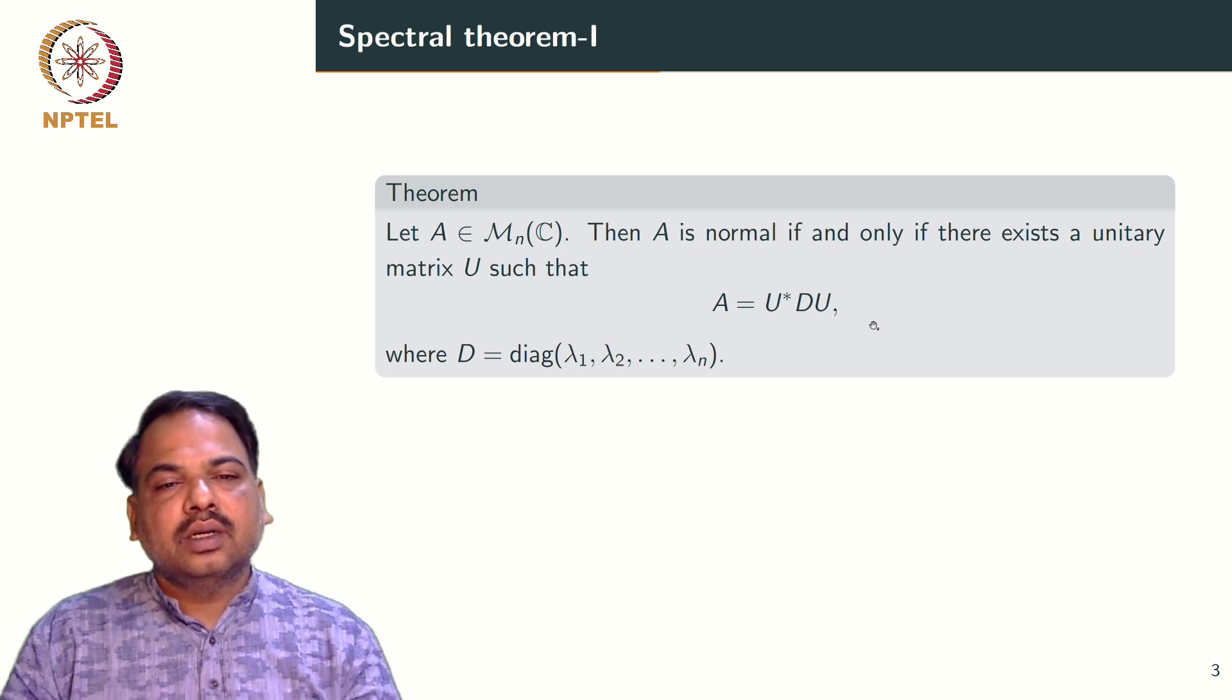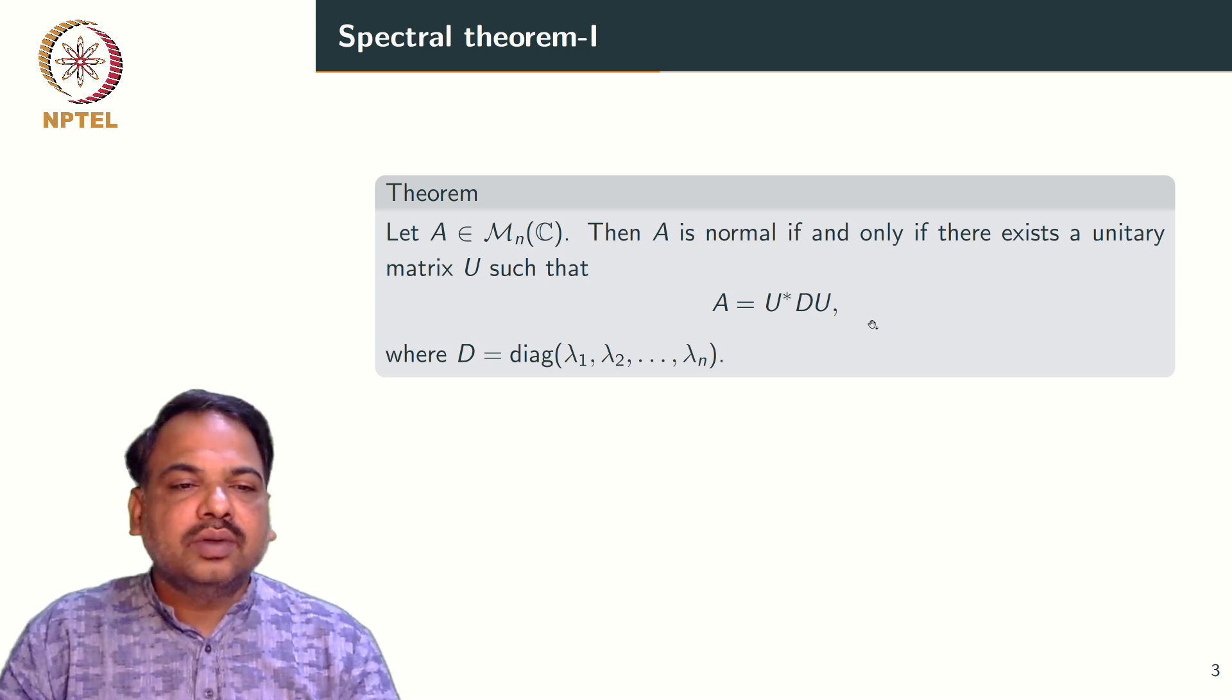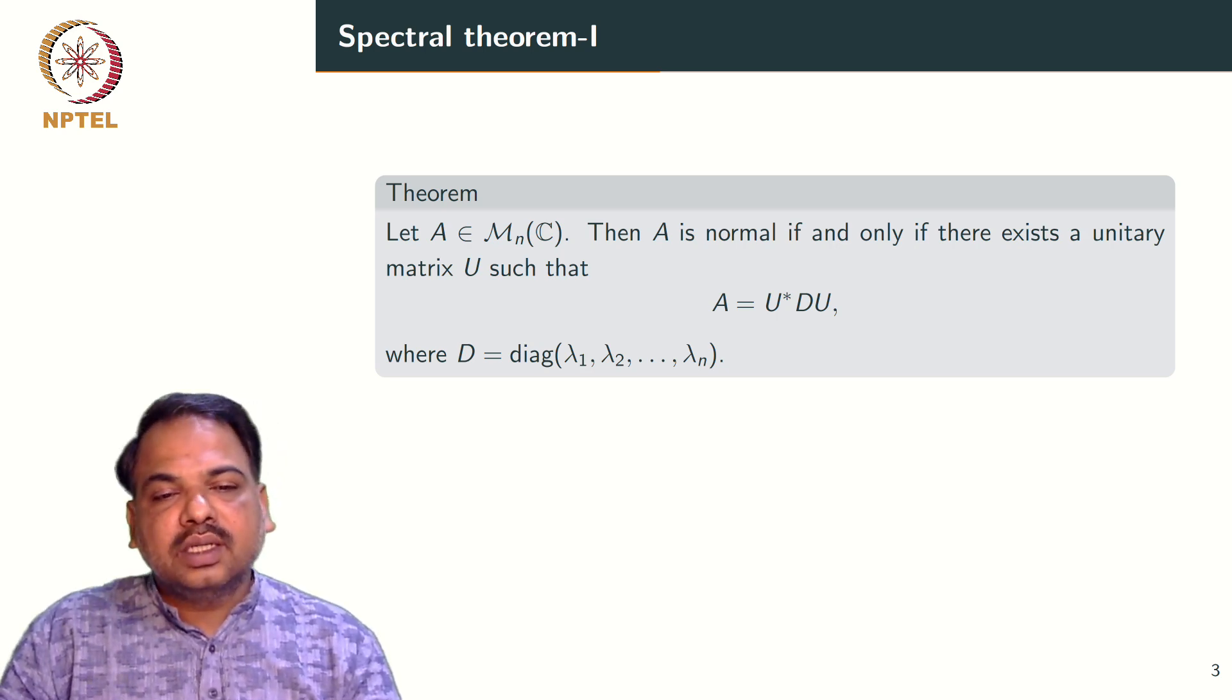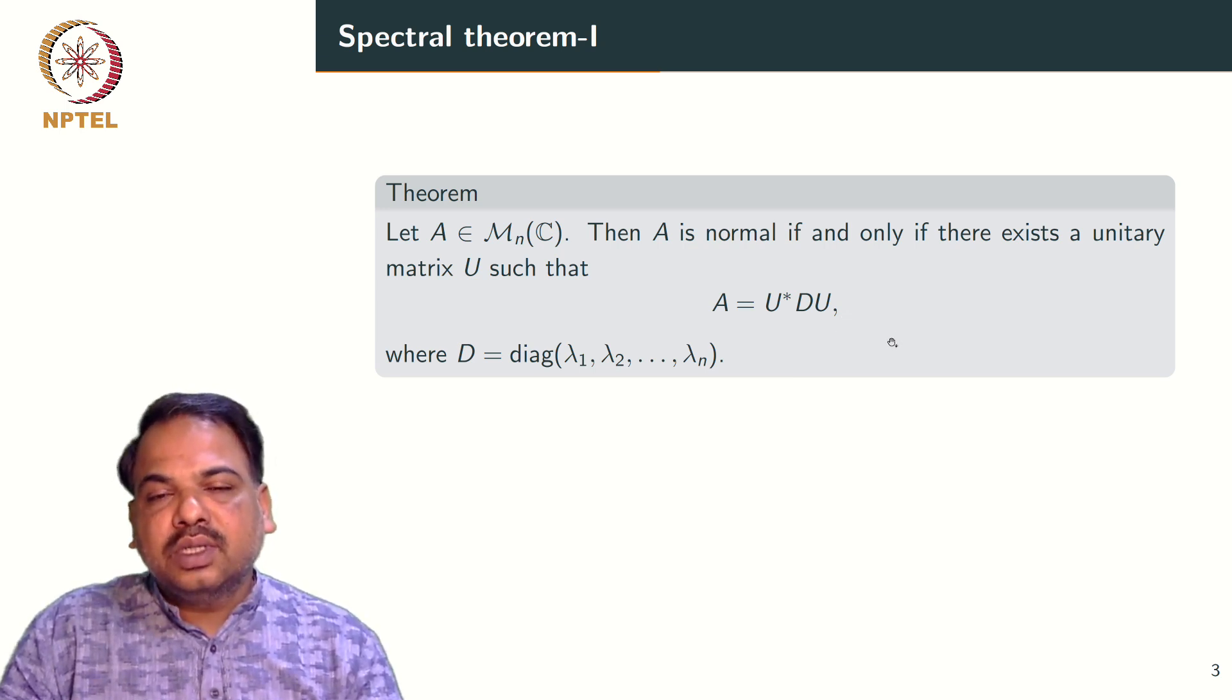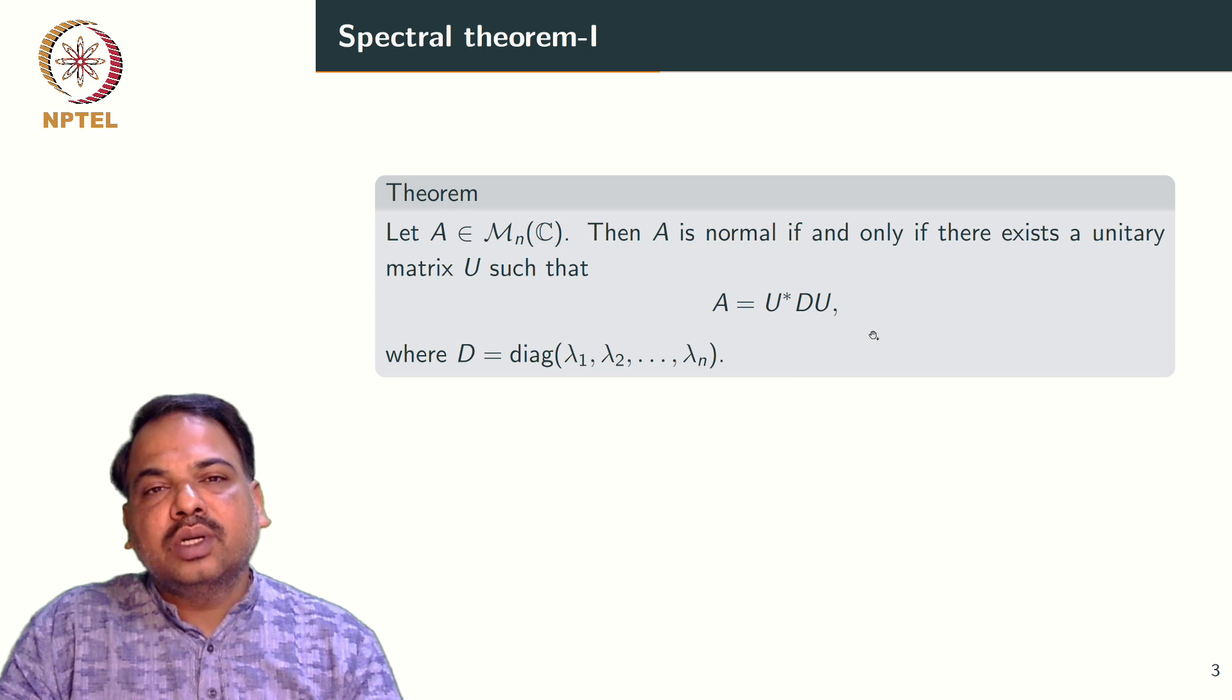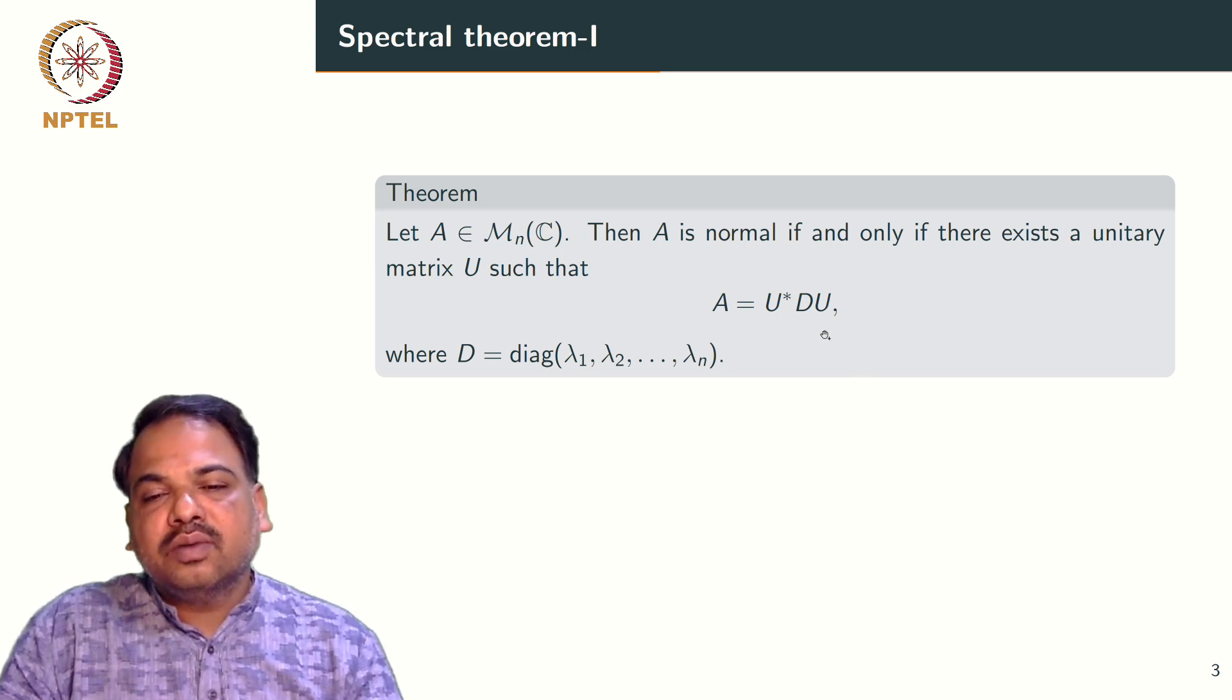Let me quickly recall two important results from Basic Linear Algebra. If A is an n by n complex matrix, then A is normal if and only if there exists a unitary matrix U such that A equals U star D U, where D is the diagonal matrix with the diagonal entries lambda 1, lambda 2, up to lambda n. These diagonal entries of D are exactly eigenvalues of A. And in fact, unitary equivalence preserves the trace, the determinant, invertibility and many more important properties. So, by expressing A in this way, we are going to get information about A from the matrix D.